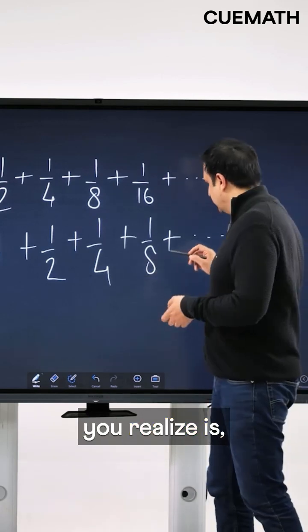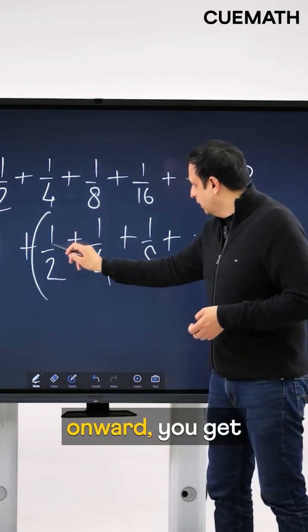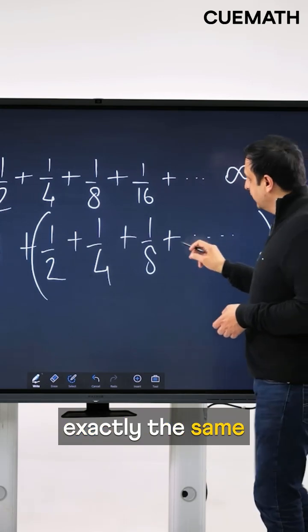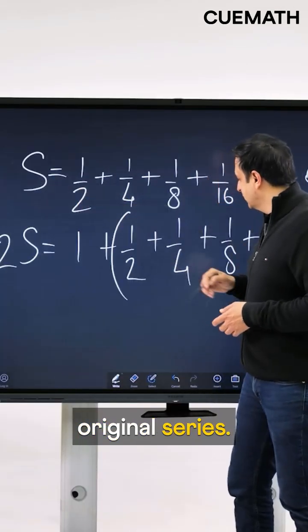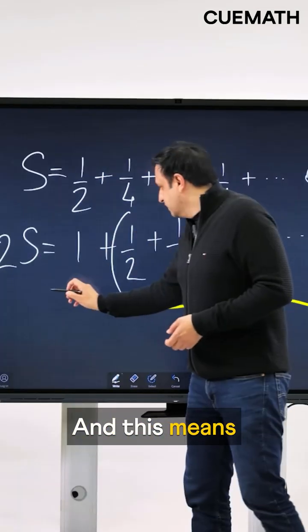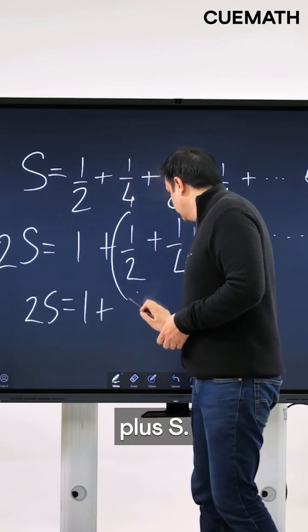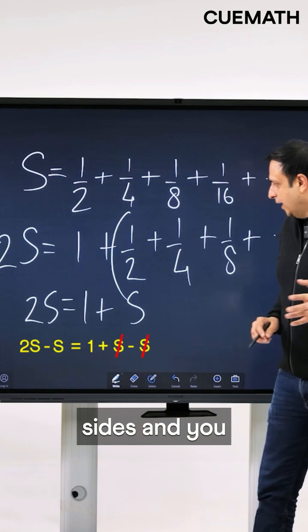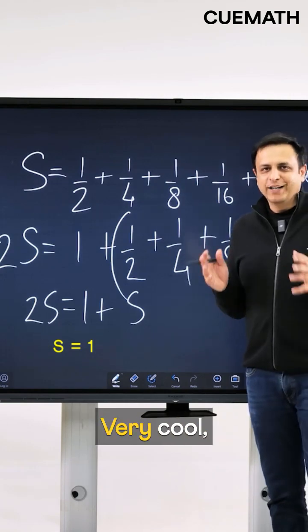And now what you realize is from this point onward you get exactly the same series as the original series. So this parenthesis is simply s and this means that 2s is equal to 1 plus s. So you subtract s on both sides and you will get s equal to 1. Very cool, right?